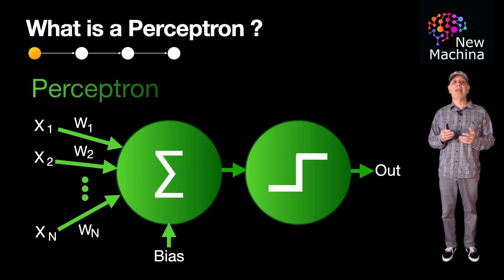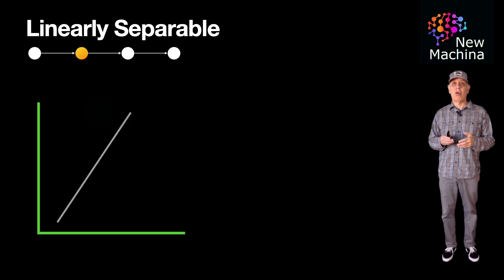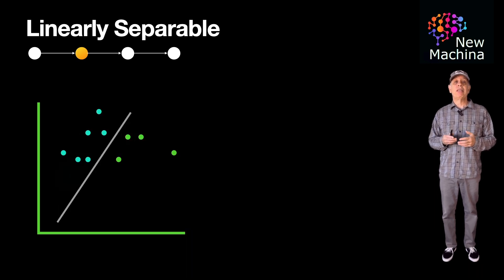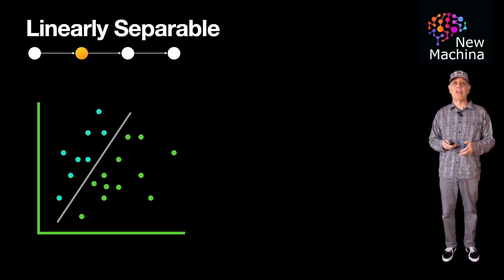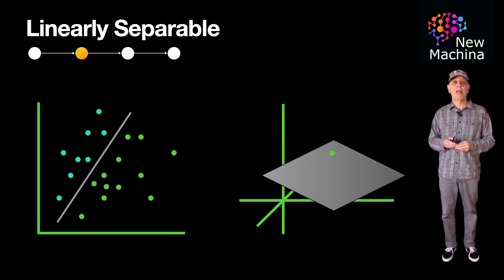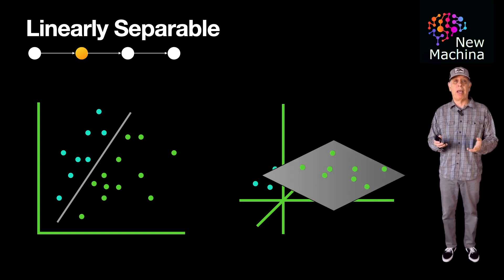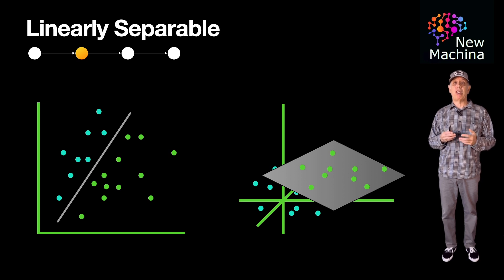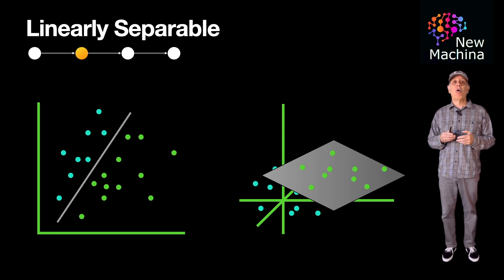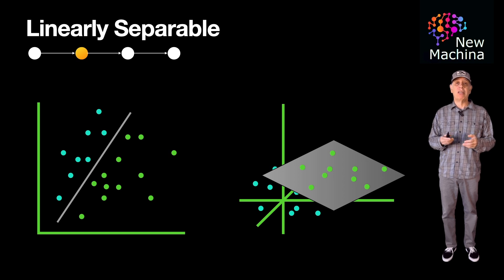With a basic perceptron being capable of classifying linearly separable data means it could find hyperplanes separating data points in two distinct classes. Visually, in 2D space, this is a line. In 3D space, this is a plane. Although this basic 1958 version of the perceptron is limited to solving problems where such linear boundaries exist, it provided the groundwork for more advanced models that we see today.